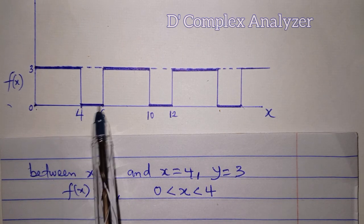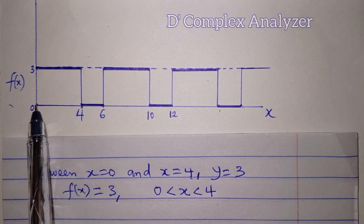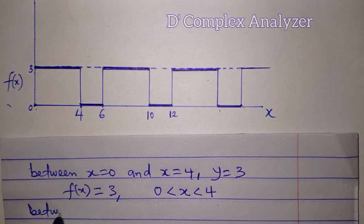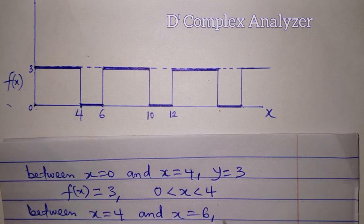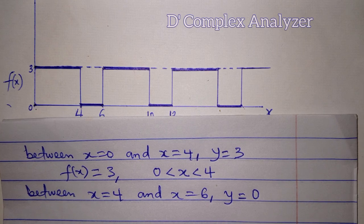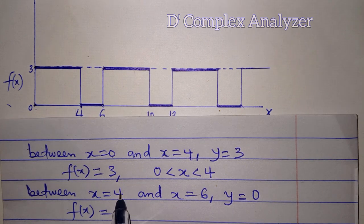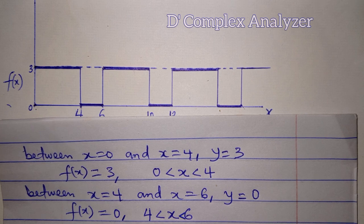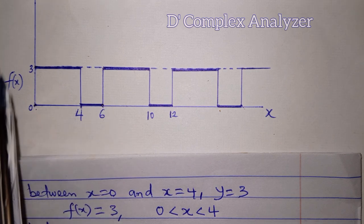Let's describe this last line. Between x equal to 4 and x equal to 6, y is equal to 0. This is the corresponding y value — 0. Between x equal to 4 and x equal to 6, y is equal to 0, so y is also f of x. That is f of x is equal to 0 in the interval 4 less than x less than 6. So we have described the function from here to here, and that gives us the description of the full function.